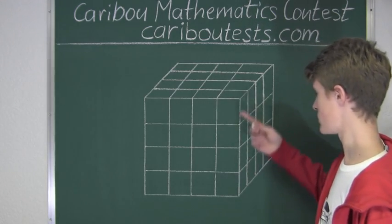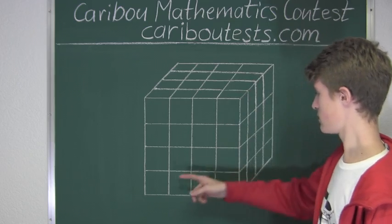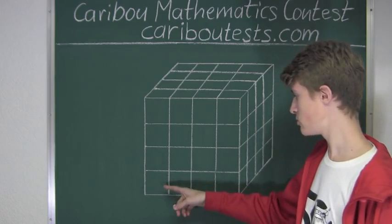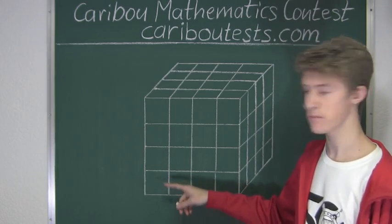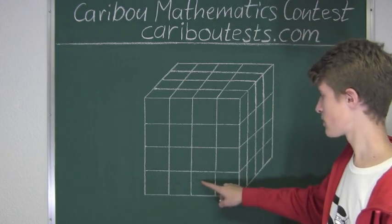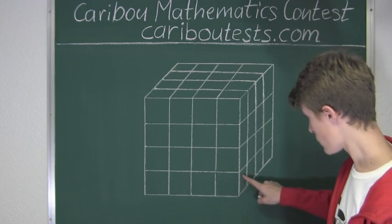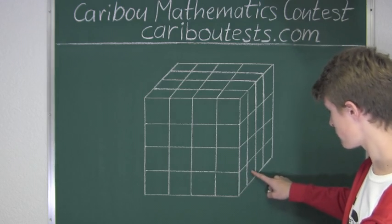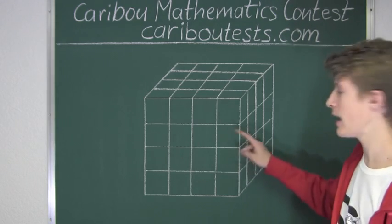So what we would do is start counting the cubes that have a piece of wax on them. So that would be 1, 2, 3, 4, and then that's one whole cube, and then 5, 6, 7, and so on.